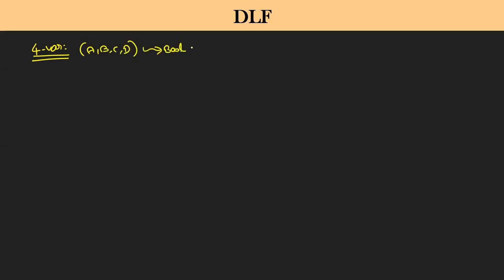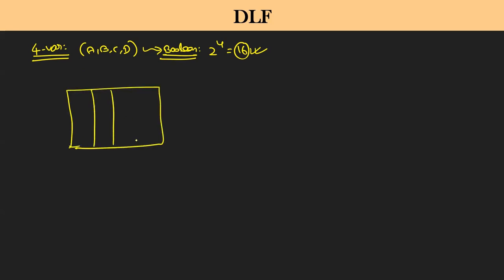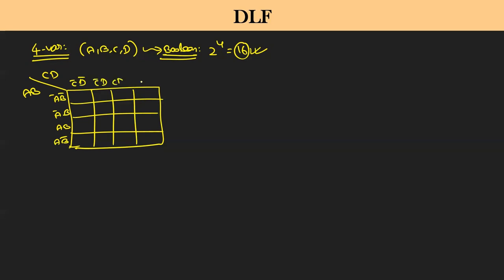Four-variable map. How many variables are there? Four variables: A, B, C, D. So how many Boolean functions are possible? Two to the power four, that is 16 possible. So you are going to have a big box of 16 elements. Here you have A,B on one axis and C,D on the other. The rows are A-bar B-bar, A-bar B, A B, A B-bar. The columns follow C-bar D-bar, C-bar D, C D, C D-bar — based on the gray code implementation.